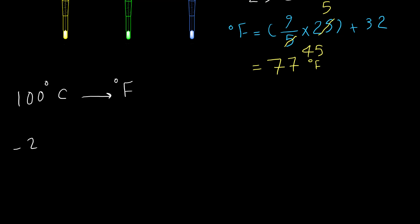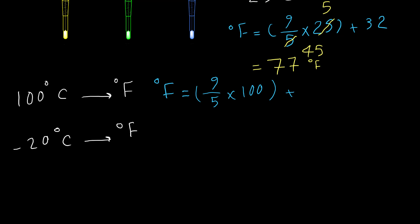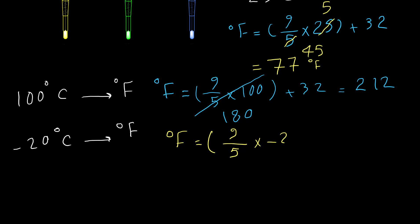For 100°C: Fahrenheit = (9/5) × 100 + 32. That gives 180 + 32 = 212°F, which is the boiling point of water. For −20°C: Fahrenheit = (9/5) × (−20) + 32. That gives −36 + 32 = −4°F.